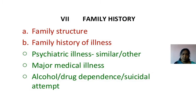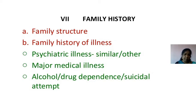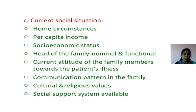Next, we go for family history. We take the structure of the family — how many members there are. Family history of illness includes: psychiatric illnesses in siblings or grandparents, major medical illnesses, alcohol or drug dependence, and suicidal attempts. Then, current social situation: home circumstances, per capita income, socioeconomic status, head of the family, attitudes of family members toward the patient's illness, and communication pattern in the family.